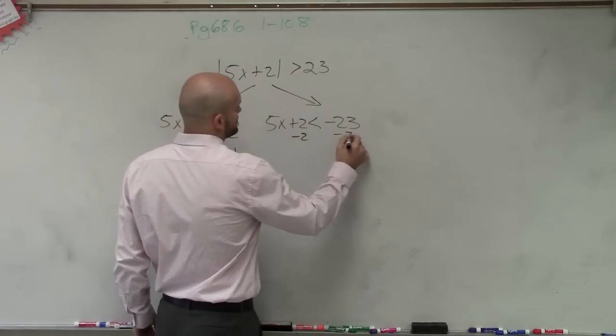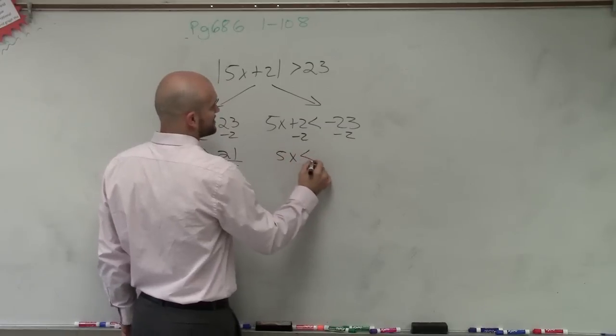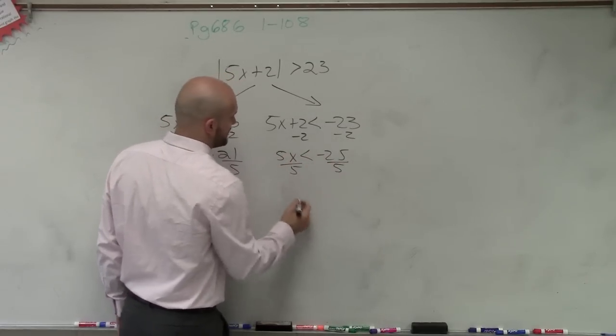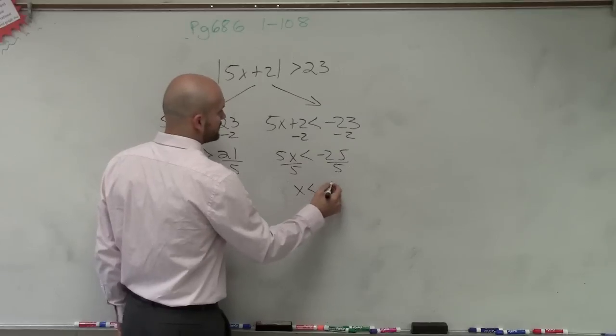And then here, I subtract, subtract. 5x is less than negative 25, divide by 5, divide by 5. x has to be less than negative 5.